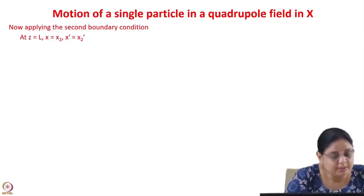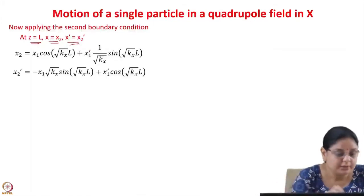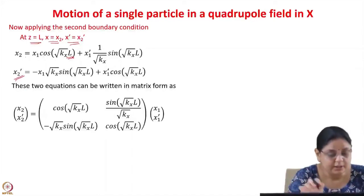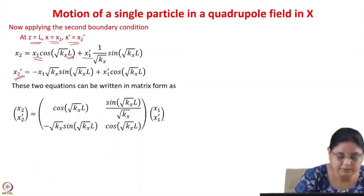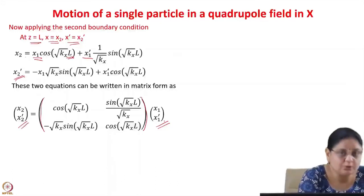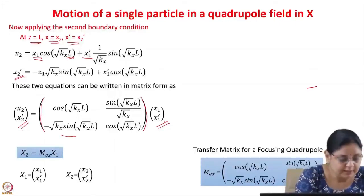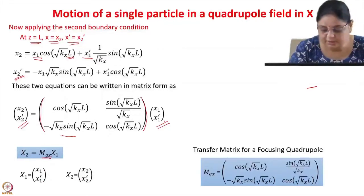Applying the second boundary condition at z = L: x = x2 and x' = x2'. Substituting gives two equations which can be written in matrix form as x2, x2' in terms of x1 and x1'. This gives the transfer matrix of the quadrupole. We write x2 = MQx · x1, where MQx is the transfer matrix of the focusing quadrupole, x1 is the input vector (x1, x1'), and x2 is the output vector (x2, x2').